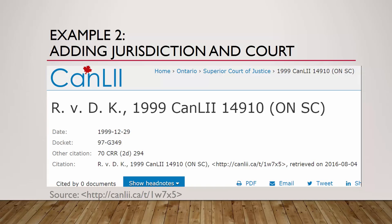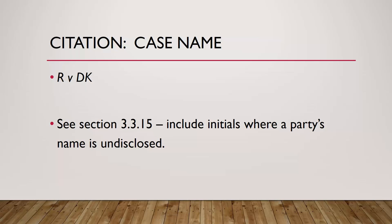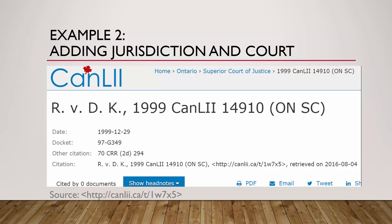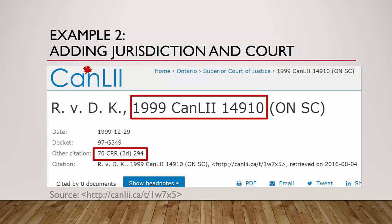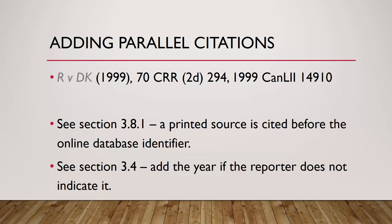Our second example will show the process for adding the jurisdiction and court to a citation. We start with the case name, then include parallel citations from two or three sources, and add the year if necessary. McGill requires that the year of the decision be included if it is not in the reporter citation. In this case, we only have the year as part of the database identifier, which is not a reporter.